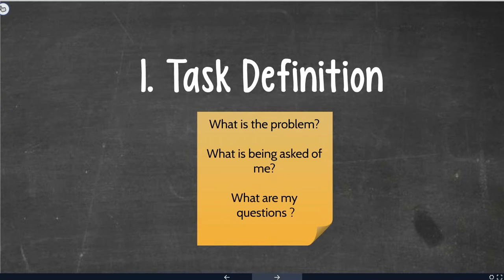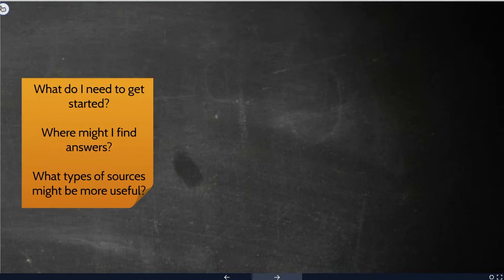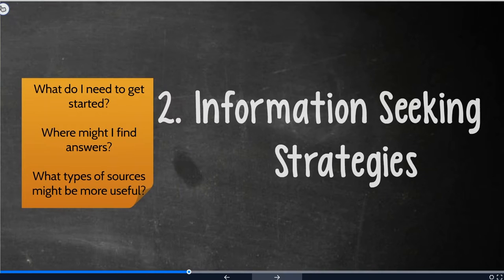Once you've done that, you move on to the next step. These are the questions that you're asking yourself at this point. What do I need to get started? Where might I find answers? And what types of sources are going to be more useful to me? This is your information-seeking strategies. This is where you start to prepare yourself for finding information. For the God Talk assignment, you're given very specific parameters. I need to quote the Bible. I need to quote a journal article. I need to quote a book. I need to quote a website. And I need to talk to somebody.